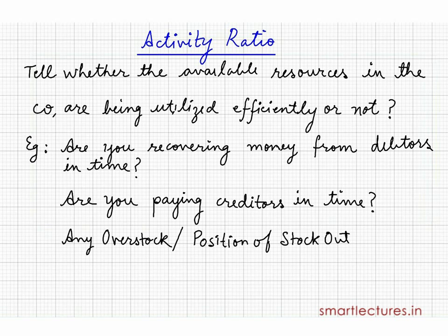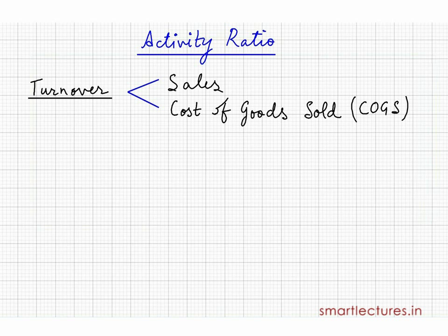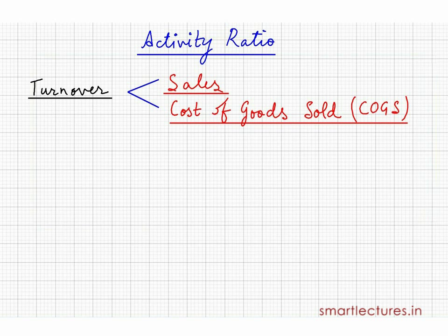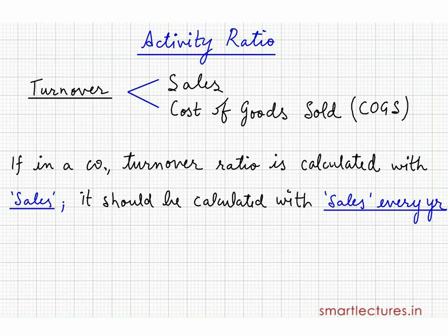For all these answers you will have to calculate activity ratios. In activity ratios we'll be using a particular term — that is turnover. Turnover can be expressed in two ways: either sales or cost of goods sold. Some ratios will be related to sales, some to cost of goods sold, and some can be related to either of them. One should be careful: if a turnover ratio is being calculated with the help of sales in some company, then it should be calculated every year with the same item. There should be consistency in the system.